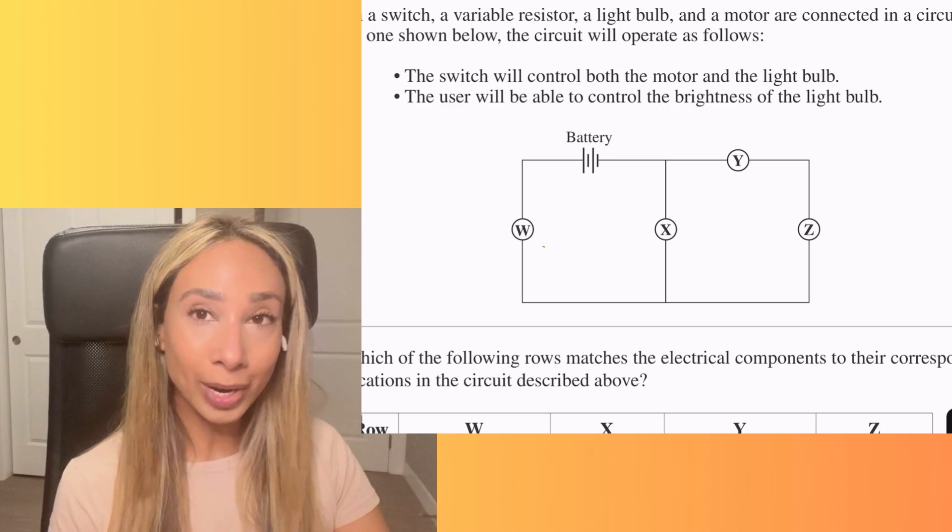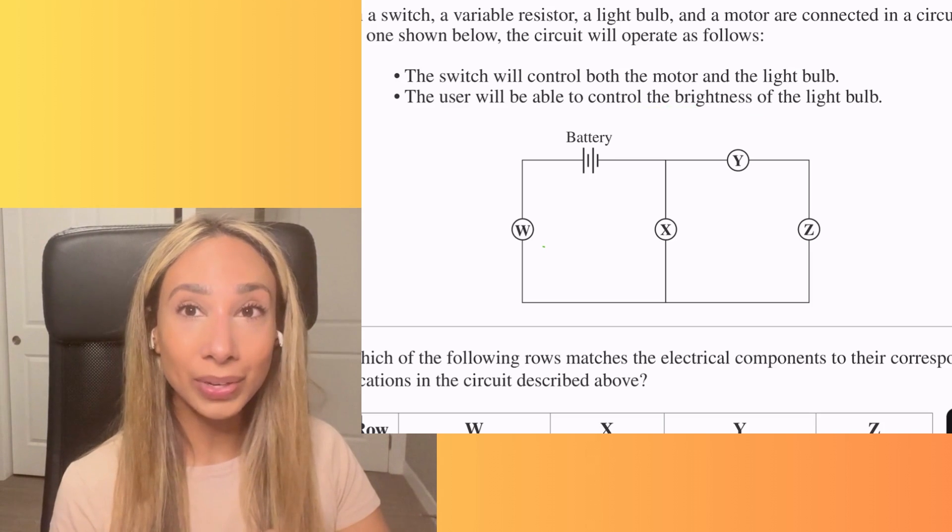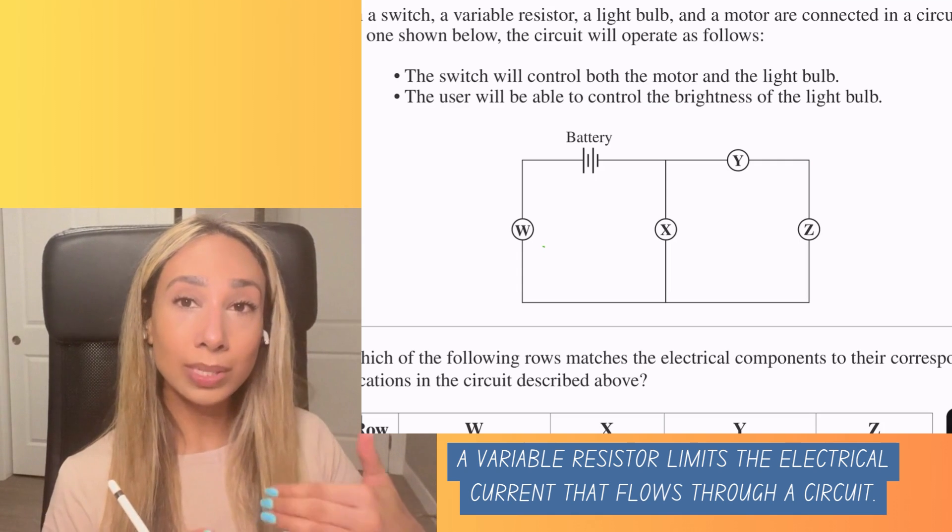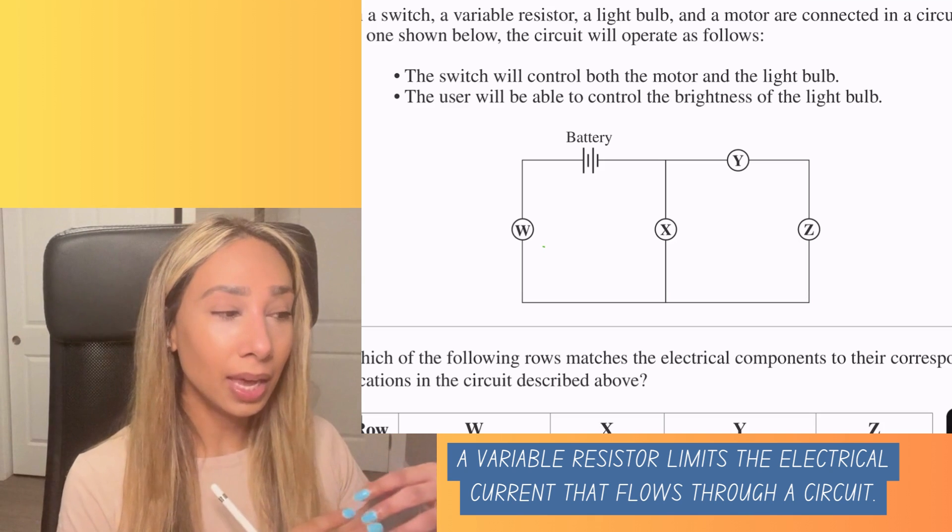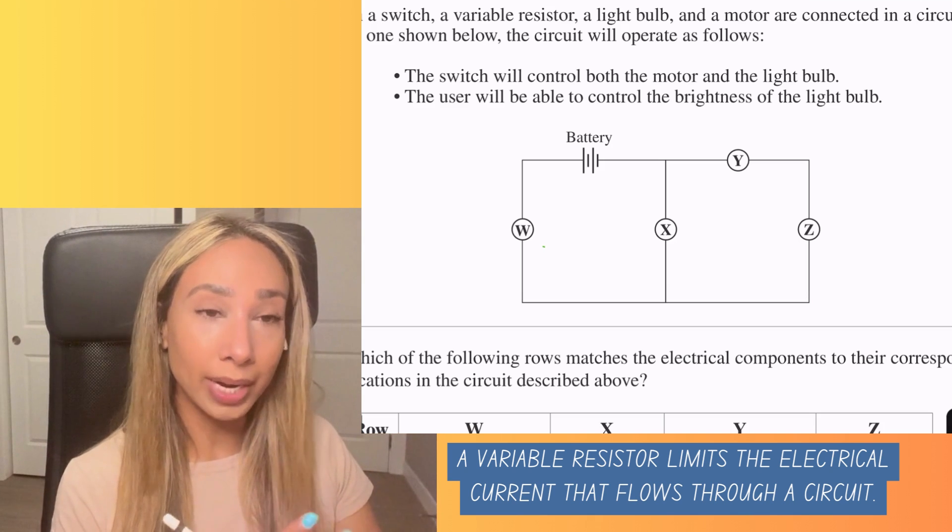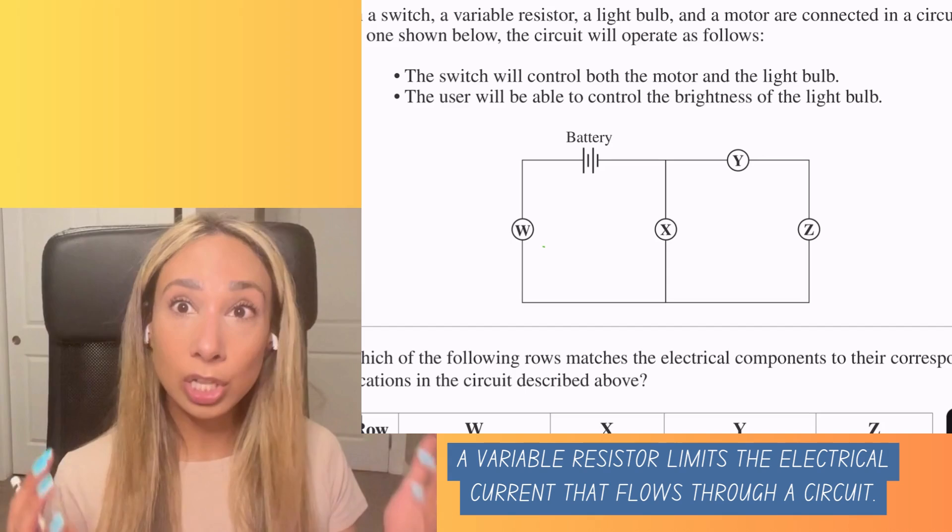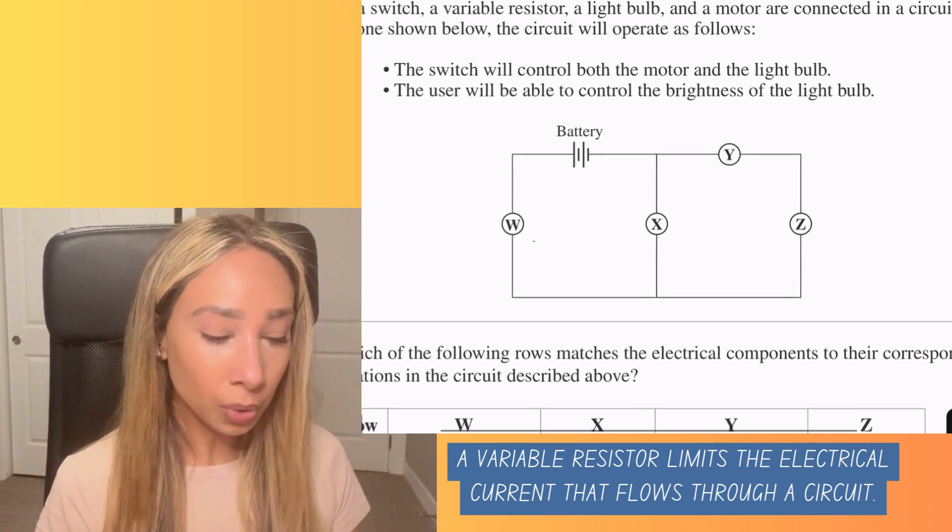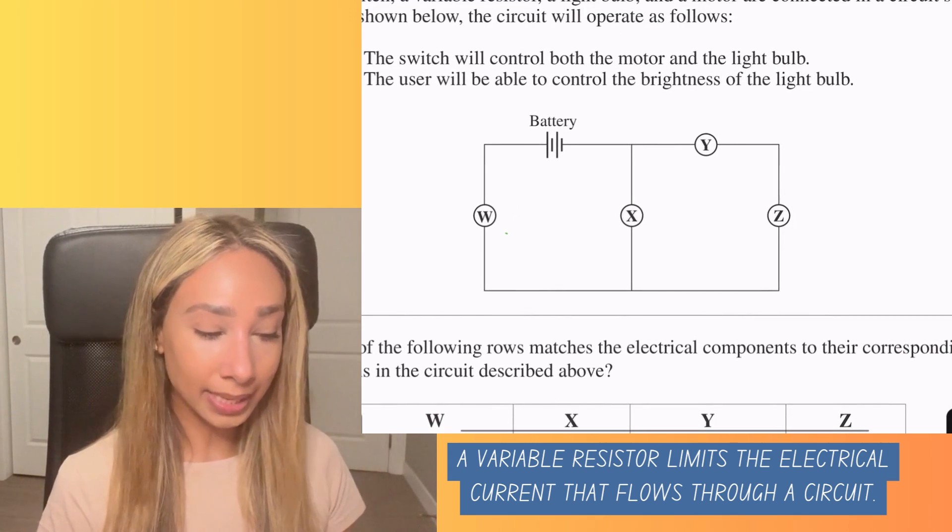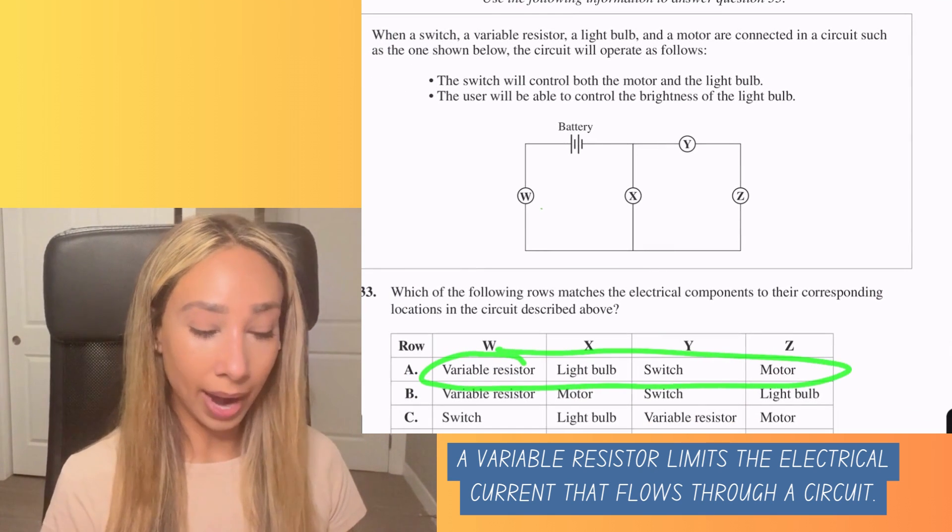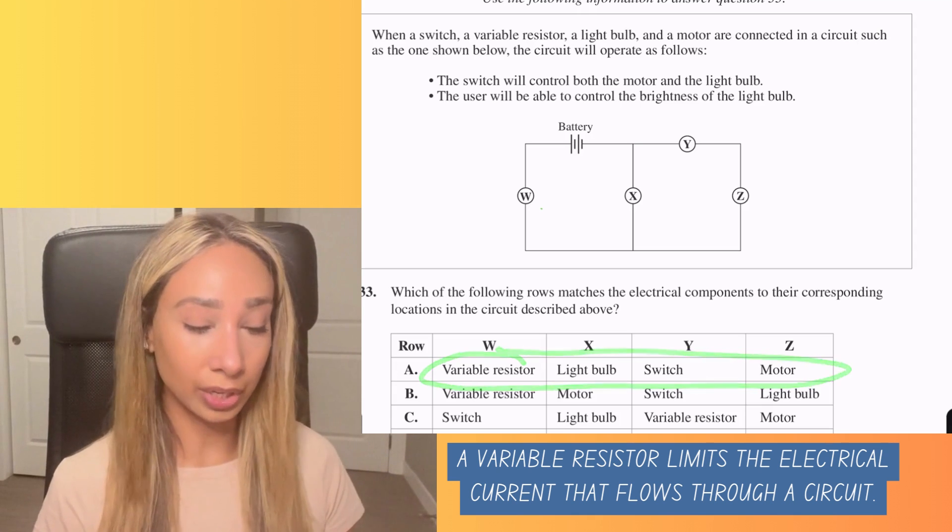So for controlling the brightness of the light bulb, that means we're going to be looking at a variable resistor. So a variable resistor is something that slows down the current enough that it changes the speed or brightness of the product. So in this case, if we're applying a variable resistor to a light bulb, it's going to slow down the brightness of the light bulb. So that means, as I'm placing everything here, based on the options, we need to decide where these four items are going to be located on this circuit.